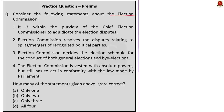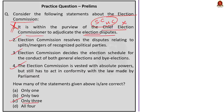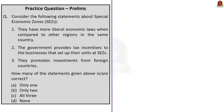The third question is about the election commission. The first statement is incorrect because it is the Supreme Court and High Court which look after election disputes, not the Chief Election Commissioner. The remaining three statements are correct. So the answer is C — only three. The fourth question is about special economic zones. All the given statements are correct: SEZs have more liberal economic laws, they provide tax incentives, and they promote investment from foreign countries. The correct answer is option C — all three.